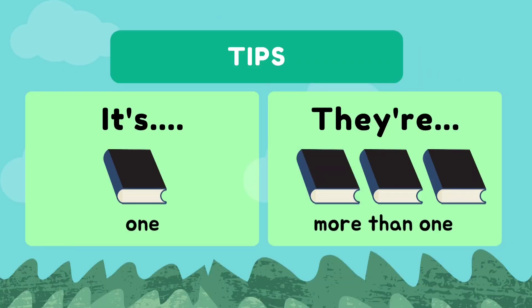Now let's look at how to use it's and there. It's is for one, while there is for more than one. It's on the table for one book, and there on the table for three books.